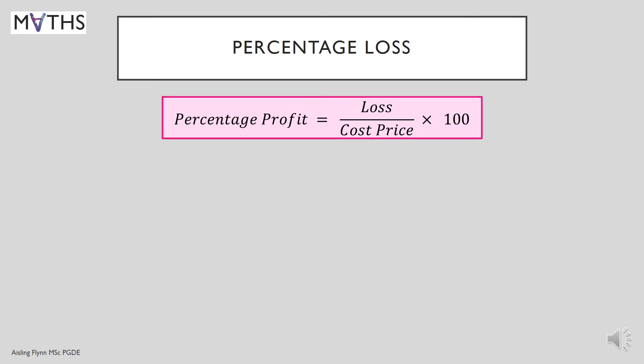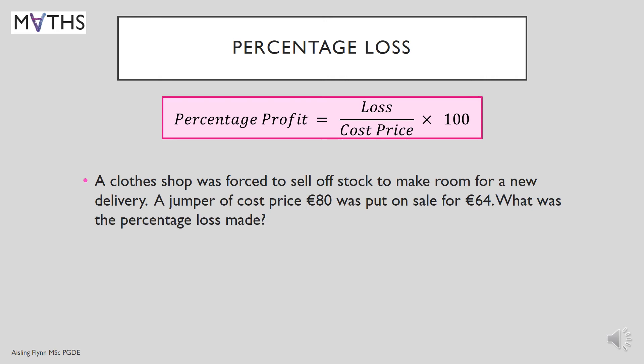We can use the same idea for percentage loss. The loss is always compared to the cost price, so it's loss over cost price multiplied by 100. A closed shop was forced to sell off stock to make room for a new delivery. A jumper of cost price €80 was put on sale for €64. What was the percentage loss made? Before you can find percentage loss, you must find how much was the loss in euros. By subtraction, 80 minus 64, we get €16 — there was a €16 loss.